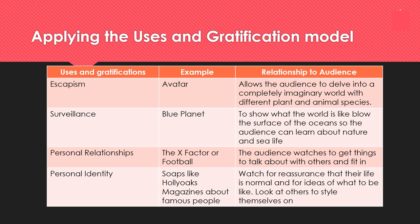Applying the Uses and Gratifications model with examples: Escapism could be Avatar, because it allows you to delve into a completely imaginary world. Surveillance could be Blue Planet, which shows you what the real world is like and helps you learn. Personal relationships could be football or the X Factor — popular mainstream content you can talk to others about. Personal identity could be soaps or celebrity magazines, because they help you see who you can relate to and develop your sense of self.